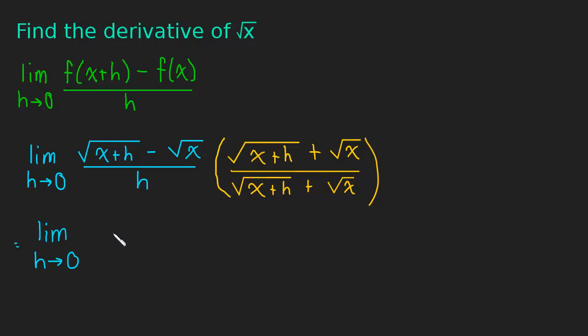So the numerator simplifies really nicely. It simplifies to x plus h minus x. So if you remember the difference of squares, you maybe can see where that comes from. This is really this squared minus this squared. And that happens when you multiply conjugates.